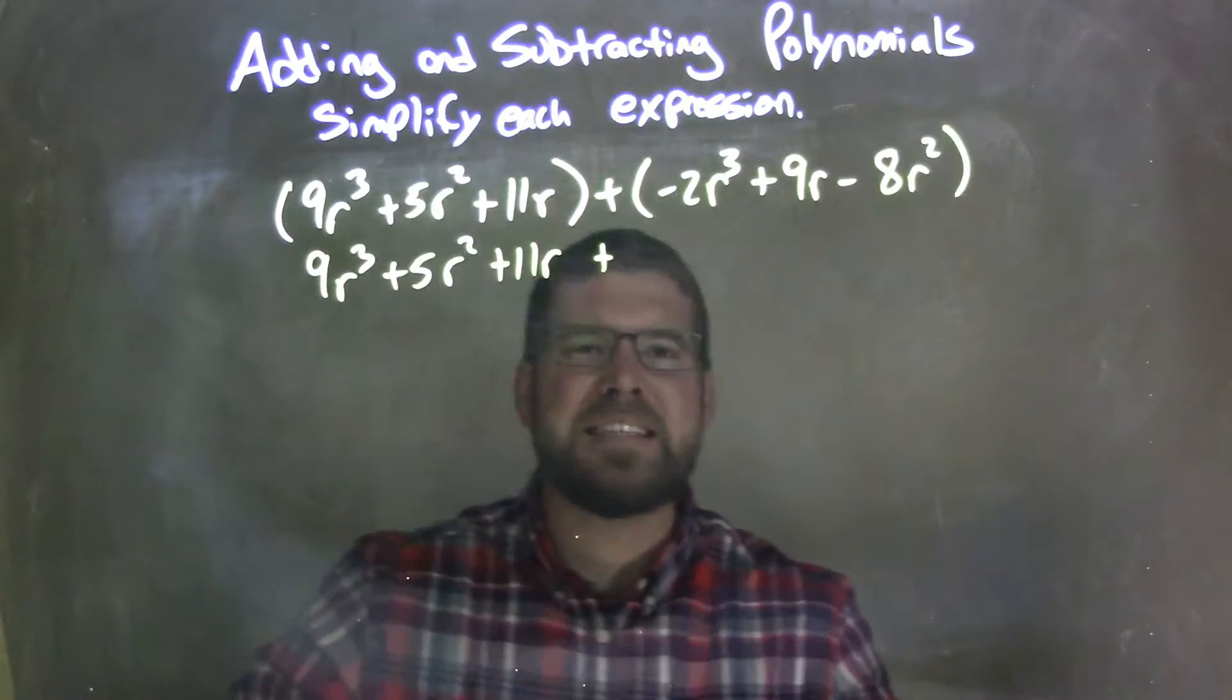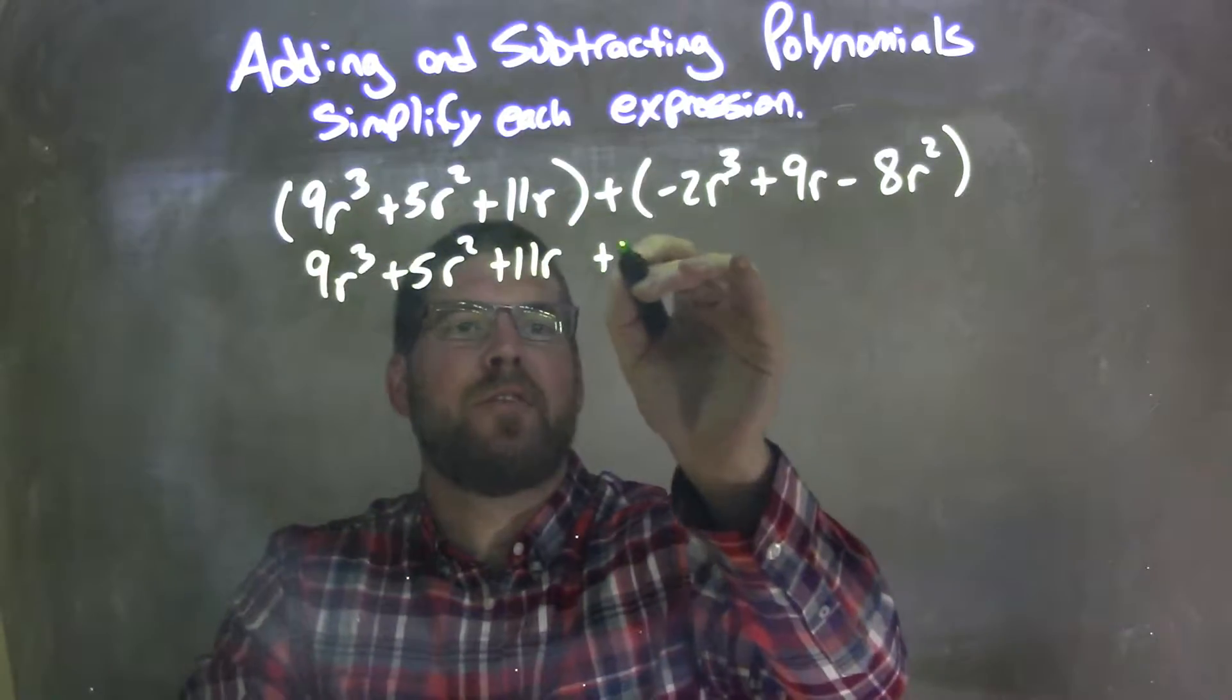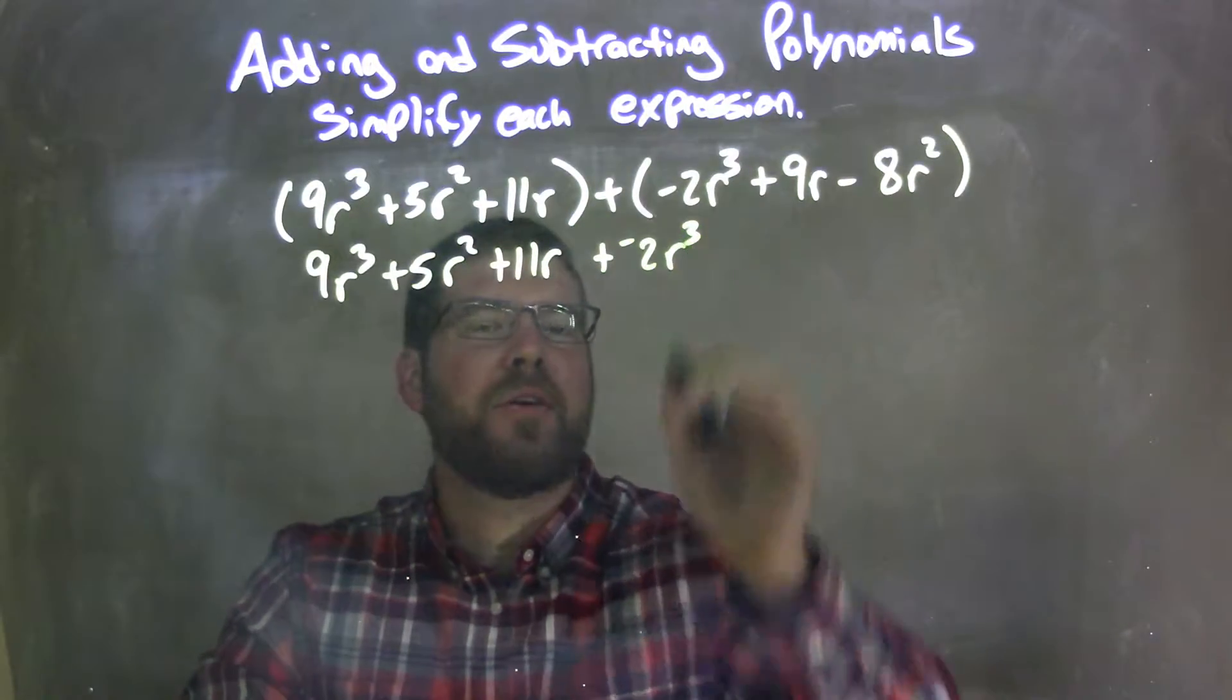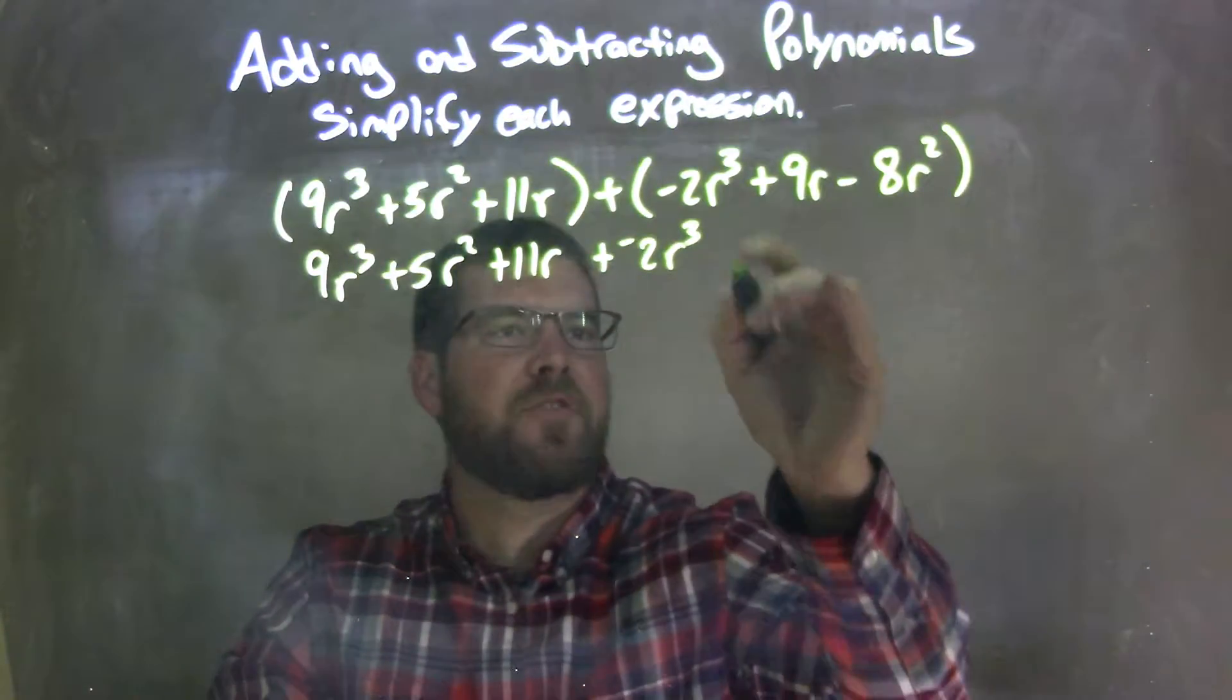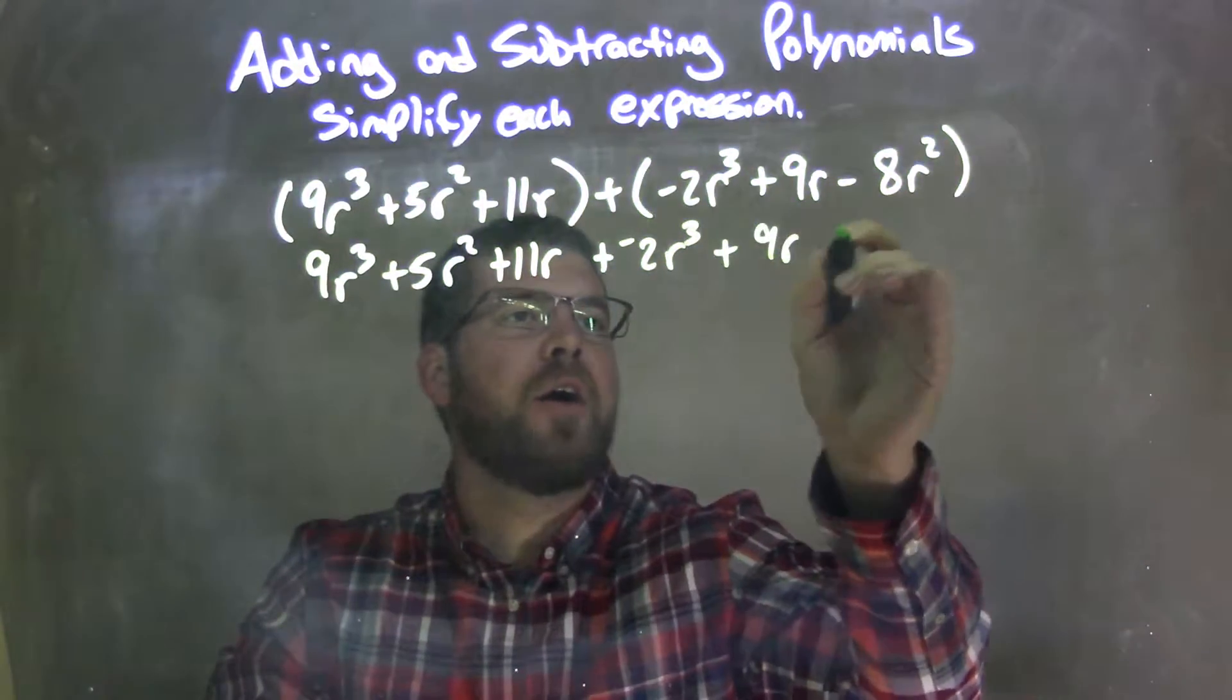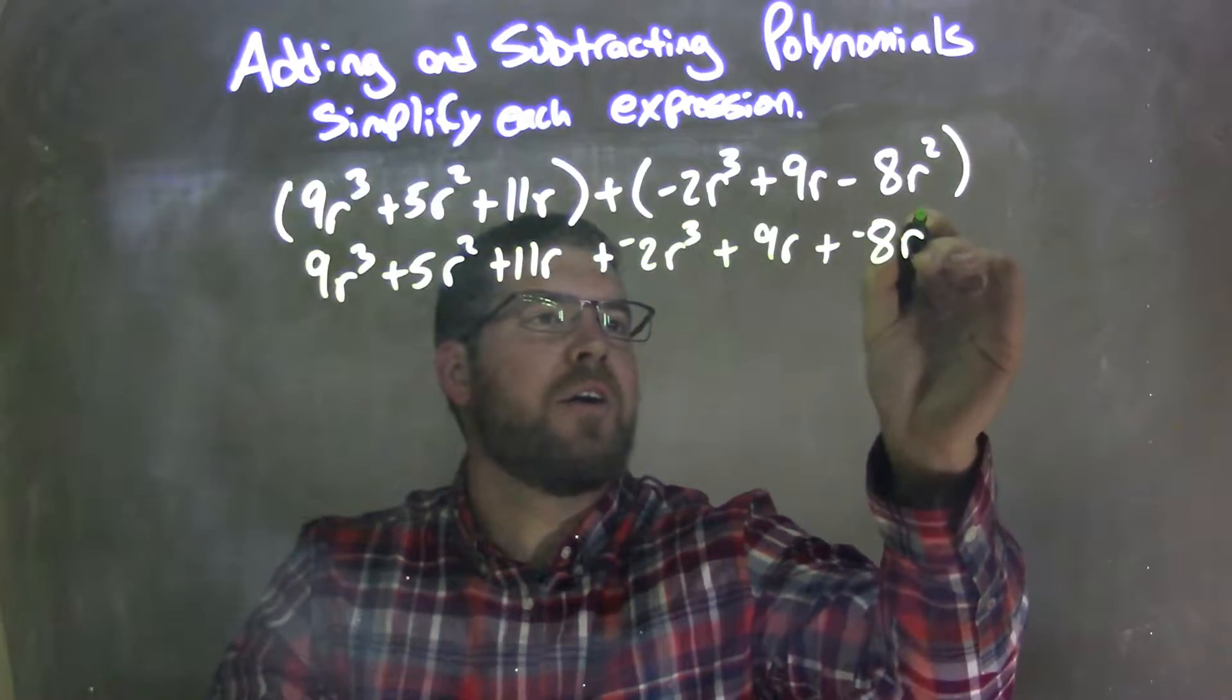And this might be tedious, but we're adding here, so it's adding a negative 2r³. It's tedious, but it needs to be done, let's take that extra step doing it. Plus 9r, and then plus a negative 8r².